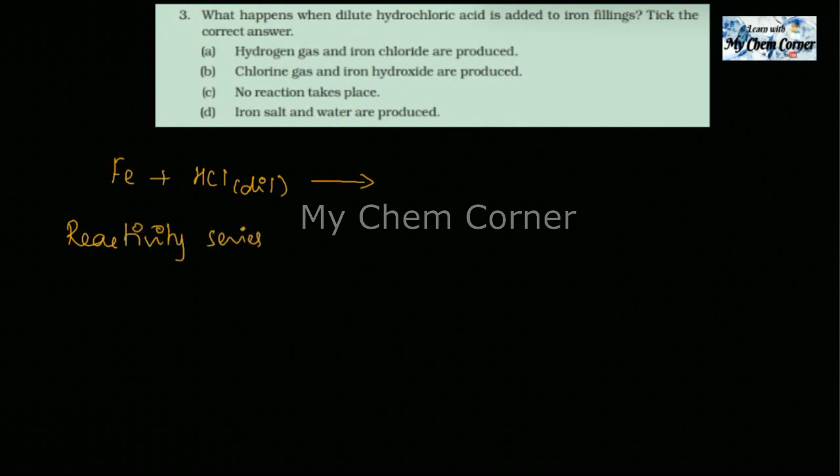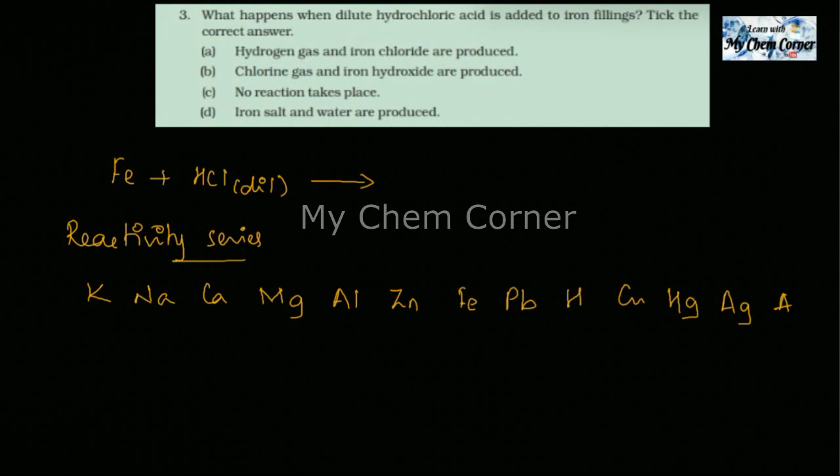When we look at the reactivity series, first we have potassium, sodium, calcium, magnesium, aluminum, zinc, iron, lead, hydrogen, copper, mercury, silver, gold, and platinum. This is the reactivity series.